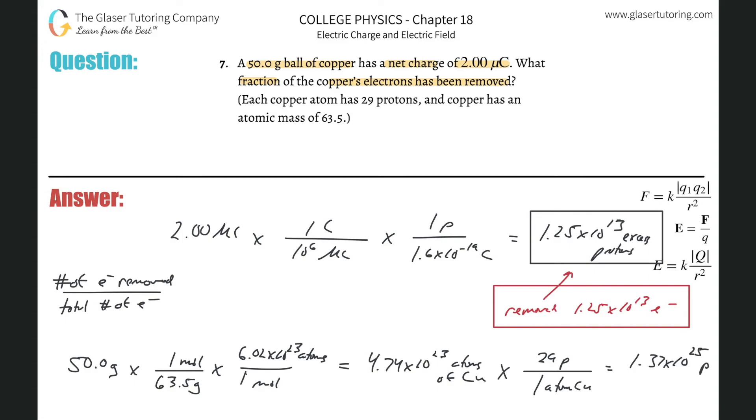Now, if this is the number of protons, and let's just assume the copper was neutral to start. If this is the number of protons, then how many electrons must there have been if it was neutral? It would have been 1.37 times 10 to the 25th electrons. It would have been the same number, because it's neutral. The electrons have to match the protons. So now this is basically the number of electrons that we're starting with. That's the total number that we had at the beginning, and then this amount was removed.